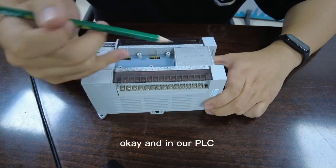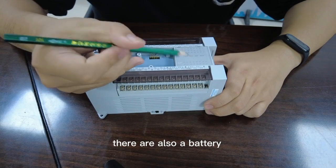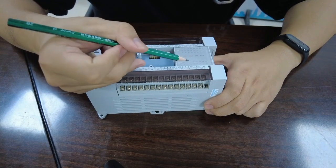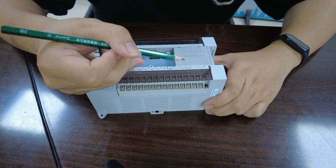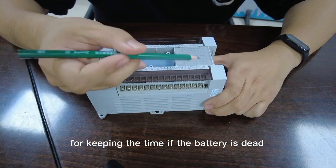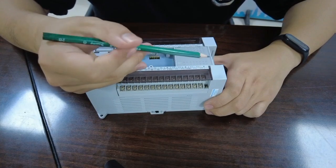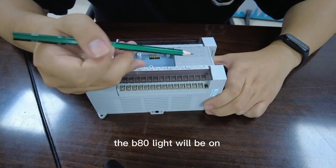And in our PLC, there is also a battery for keeping the time. If the battery is dead, the BAT light will be on.